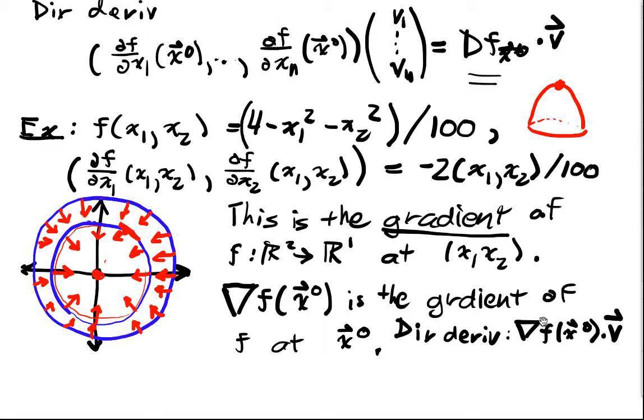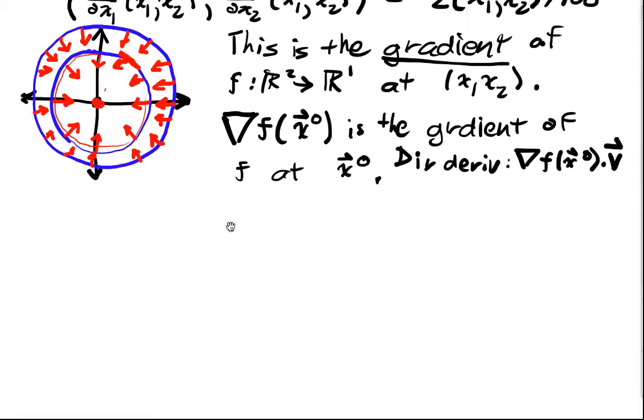And if we notice this, remember this is exactly the norm of this guy times the norm of this guy times the cosine of the angle between them. And so the cosine is going to be maximal, the cosine is going to be 1 if v is a multiple of the gradient. So if I move exactly along the gradient, then I'm going to maximize this directional derivative. And what is the derivative telling me? The derivative tells me the change or the slope of a function. That's what makes the gradient so interesting.